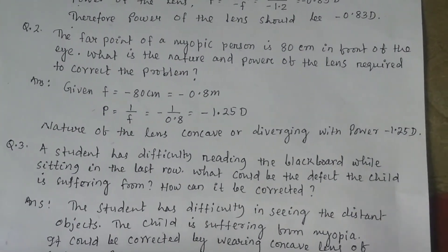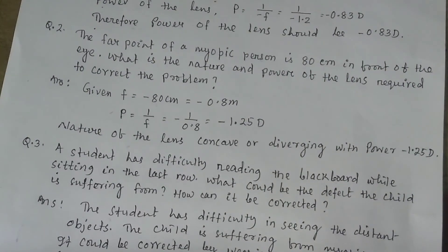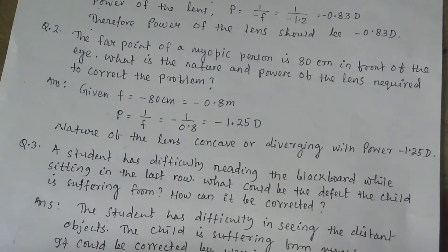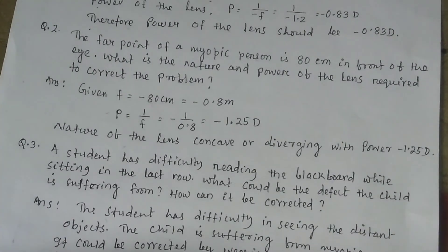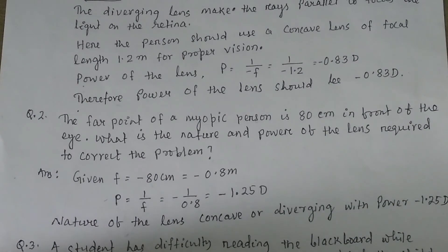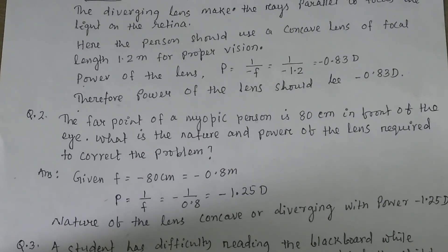Next problem: The far point of a myopic person is 80 centimeters in front of the eye. What is the nature and power of the lens required to correct the problem? The focal length is −80 cm or −0.8 m. Power P = 1/F = 1/(−0.8) = −1.25 diopters. The nature of the lens is concave or diverging with power −1.25 diopters.